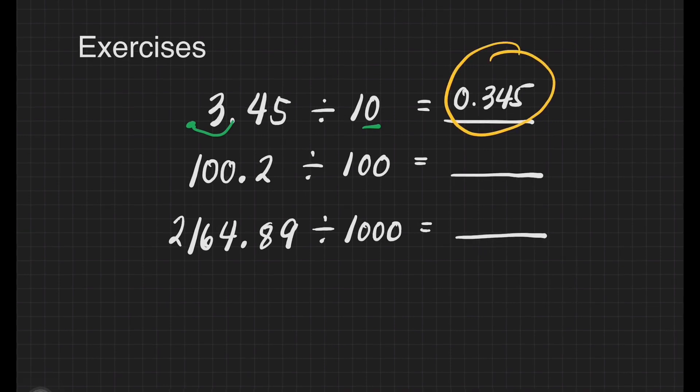Next, we have 100.2 divided by 100. We have two zeros in our divisor. It means we will move two decimal places in our dividend. That will give us 1.002. That is 1 and 2 thousandths.